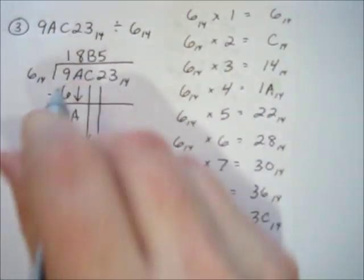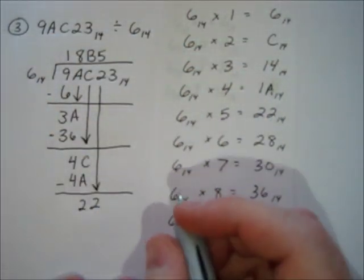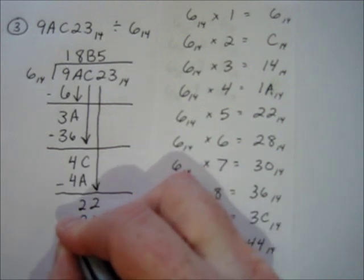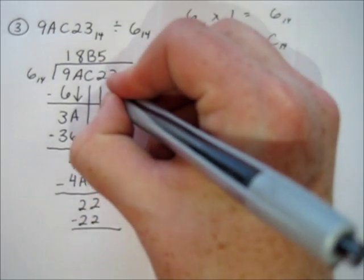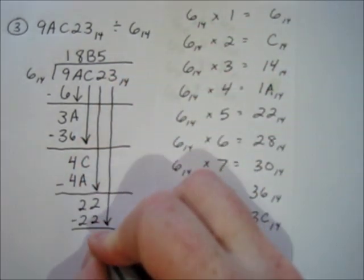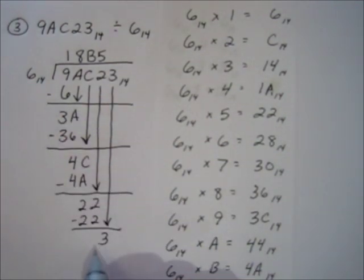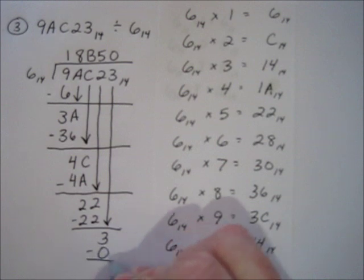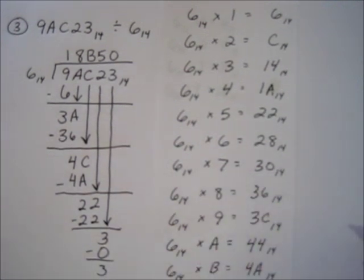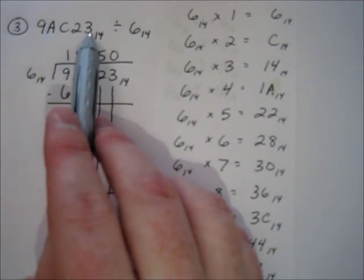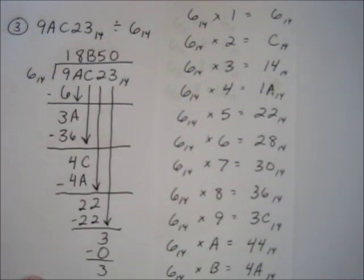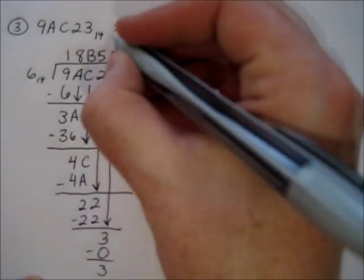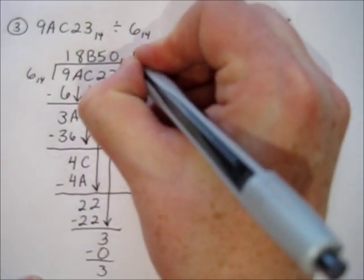Subtract, we get 0. Bring down our 3. How many times does 6 go into 3? It doesn't, so we put a 0. 0 times 6 is 0. Subtract and we get 3, and there's nothing left to bring down, so that's our remainder. So 9AC23 base 14 divided by 6 base 14 is 18B50 base 14 remainder 3 base 14.